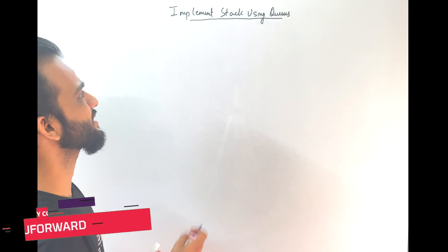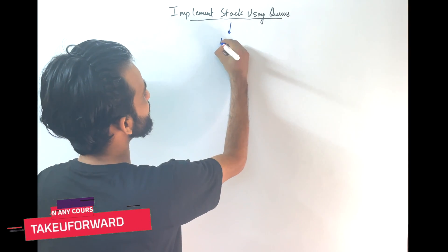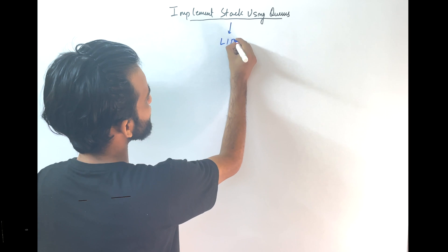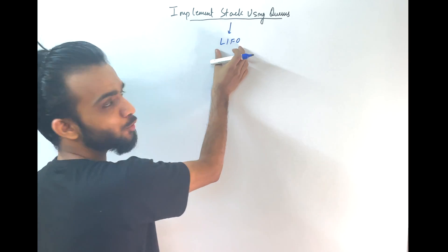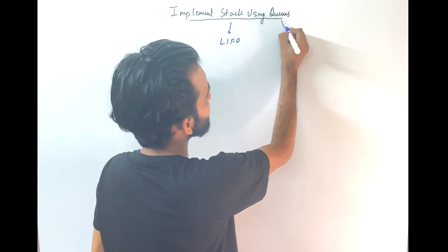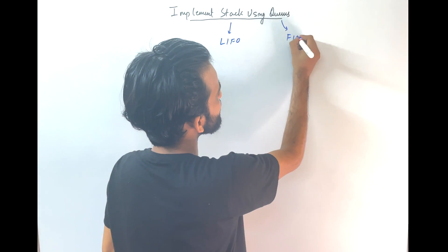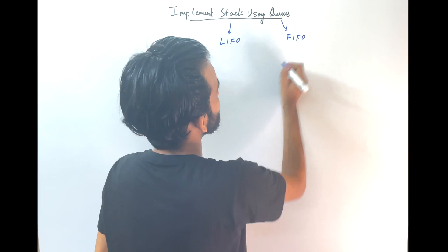So basically, what is a stack? Stack is a data structure which implements a last-in first-out kind of thing. And queue is a data structure which implements first-in first-out.